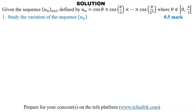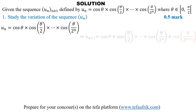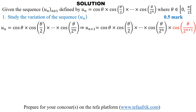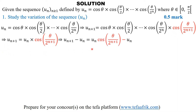So let's compute UN+1 and do the difference with UN to see what we get. UN is given as the product of cosine of theta, times cosine of 2theta, and so on, right up to cosine of theta on 2 to the N. So UN+1 simply extends this product to end at the N+1 term, which is cosine of theta on 2 raised to the power N+1. The difference UN+1 minus UN equals UN times (cosine of theta on 2 to the N+1 minus 1).